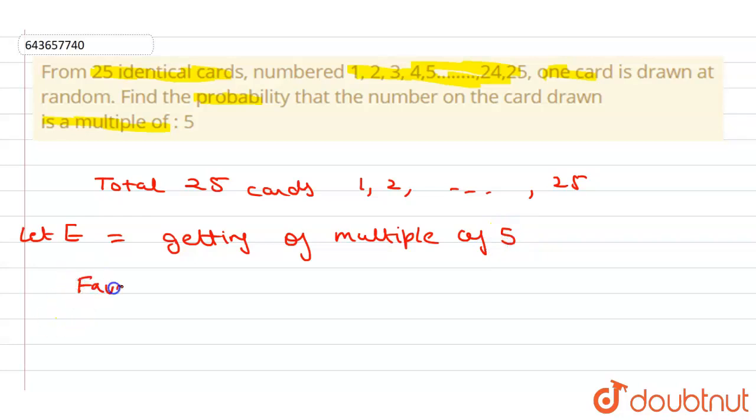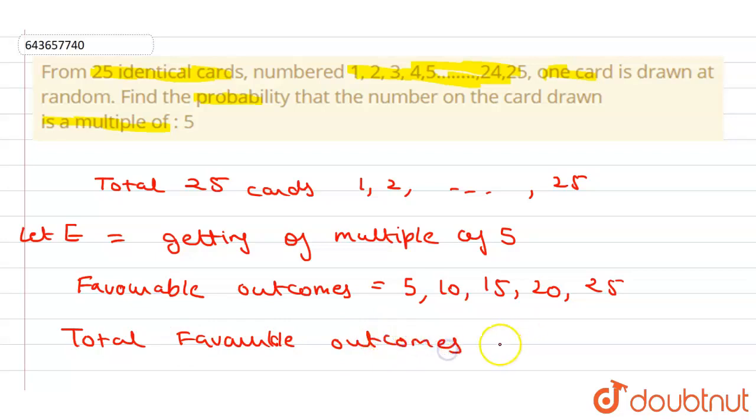So we can say that favorable outcomes are 5, 10, 15, 20 and 25. So we can say that total number of favorable outcomes equals to 5. Let's suppose this equals to n(F).